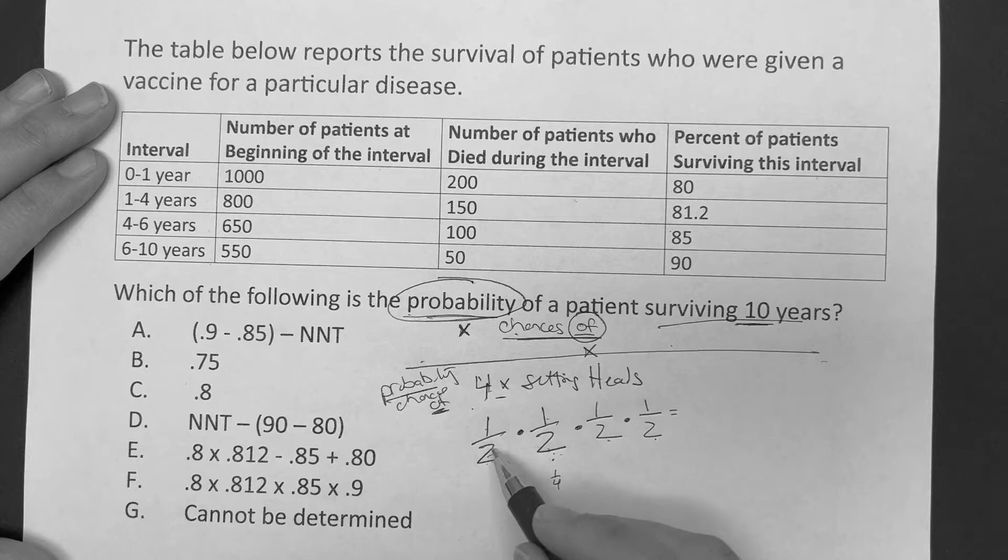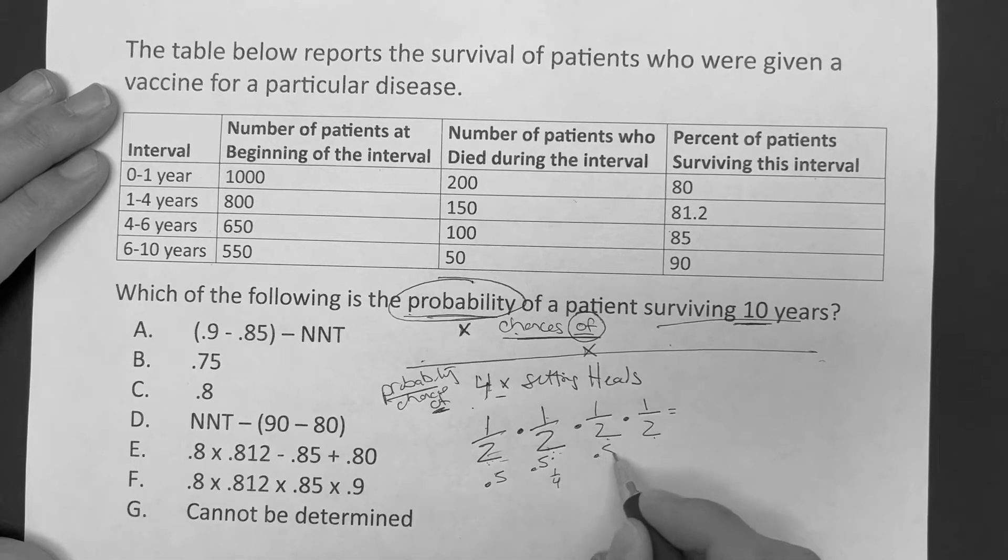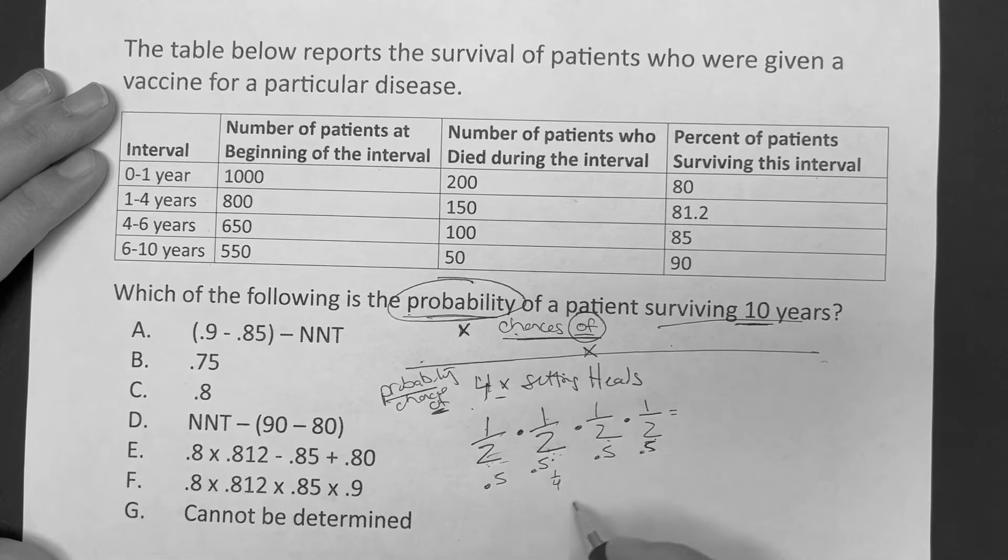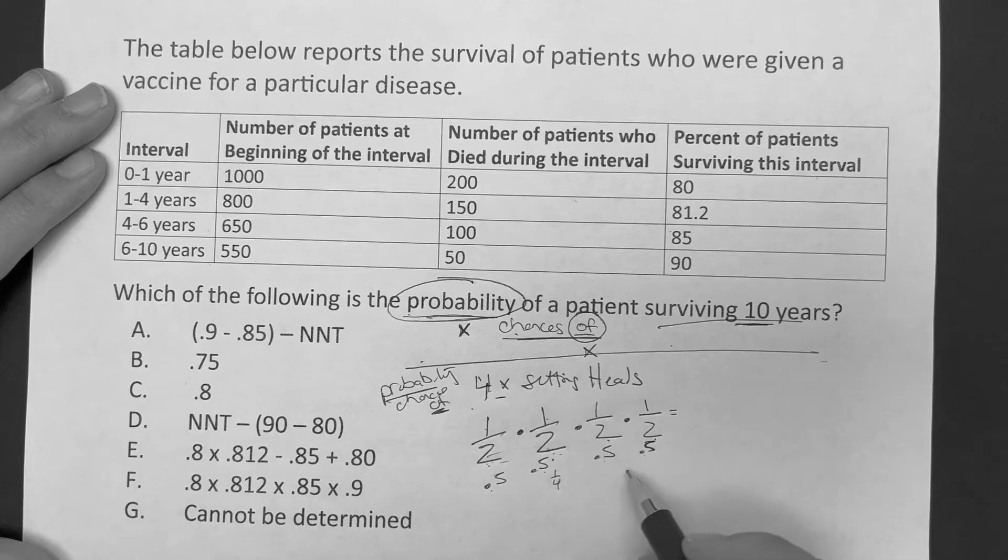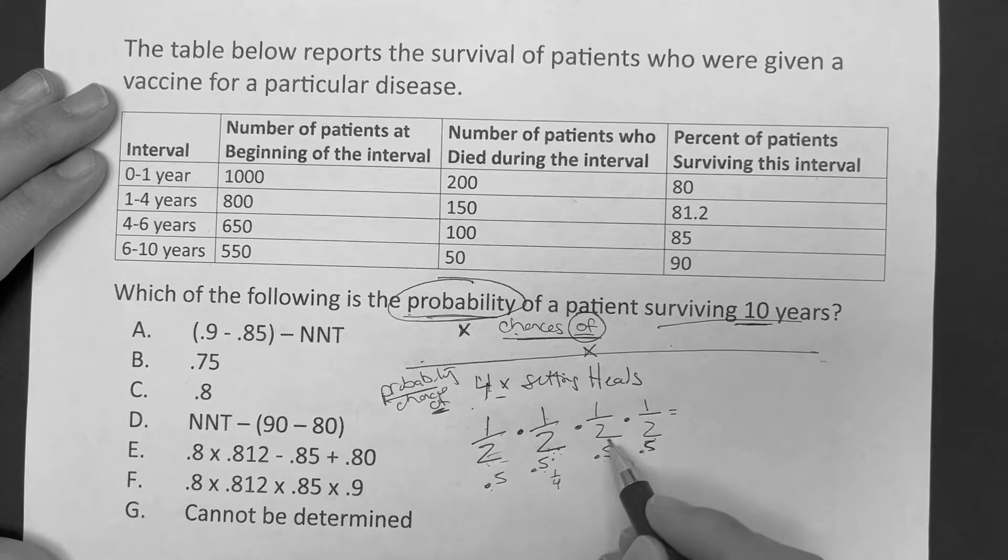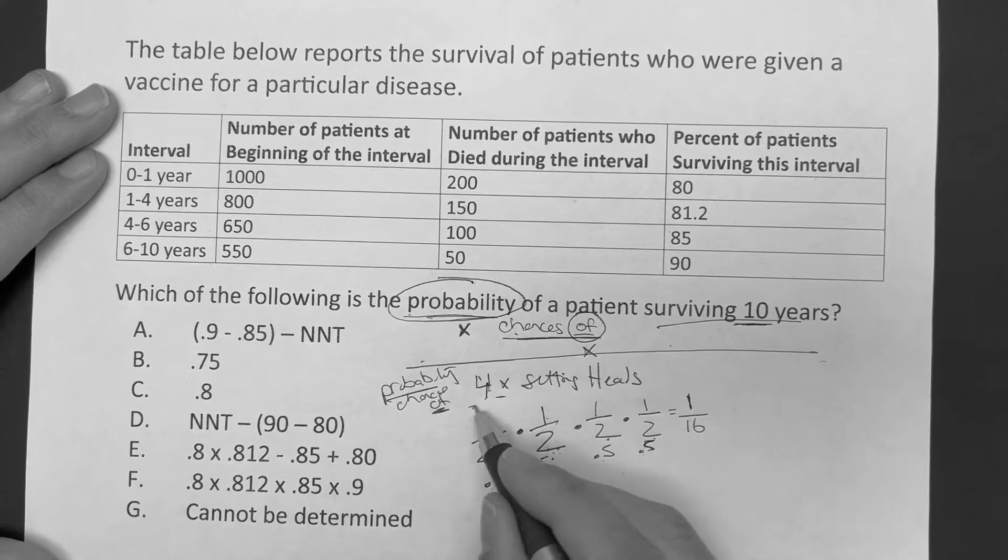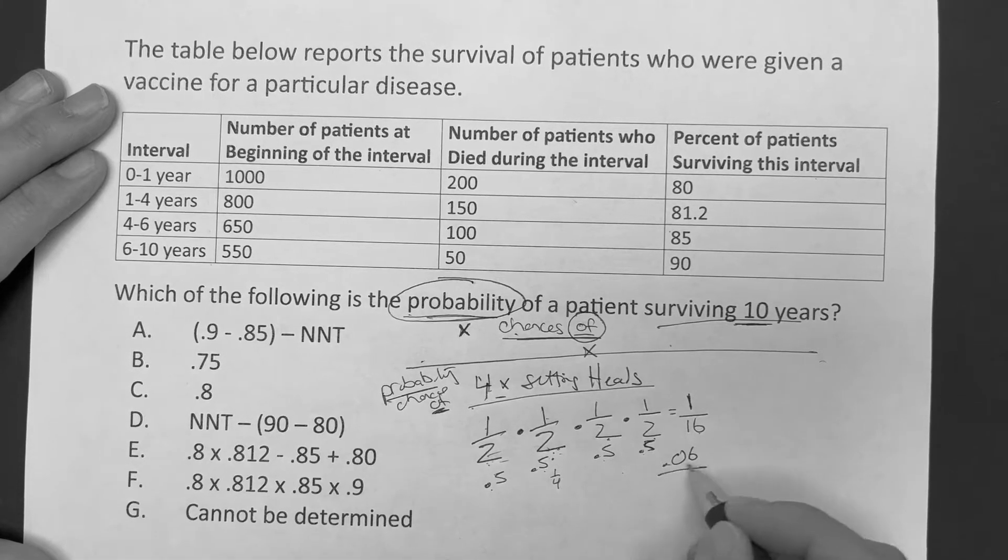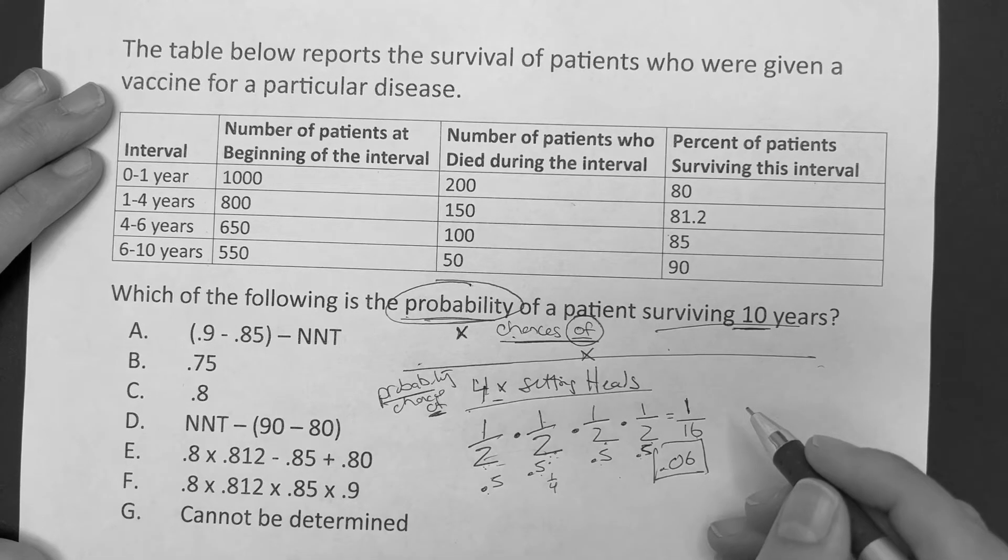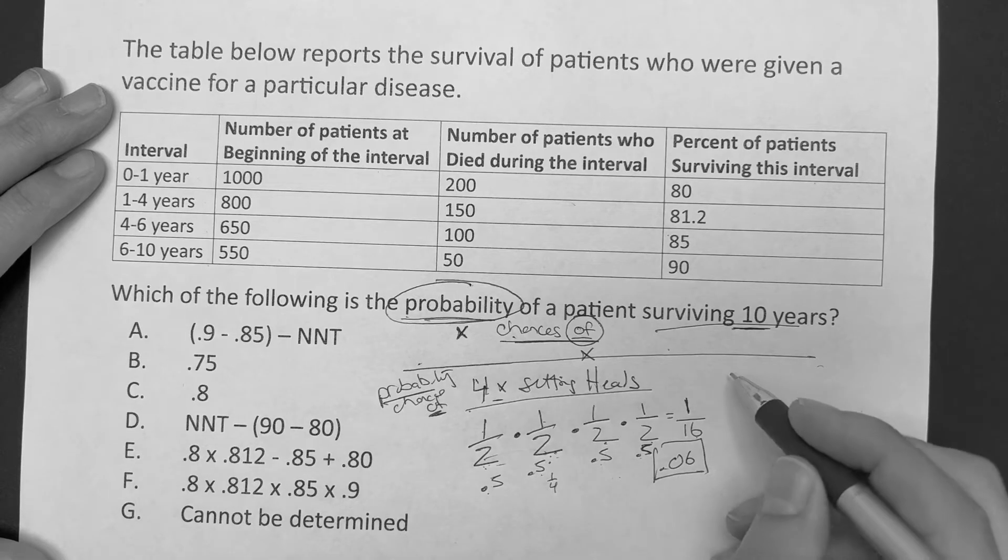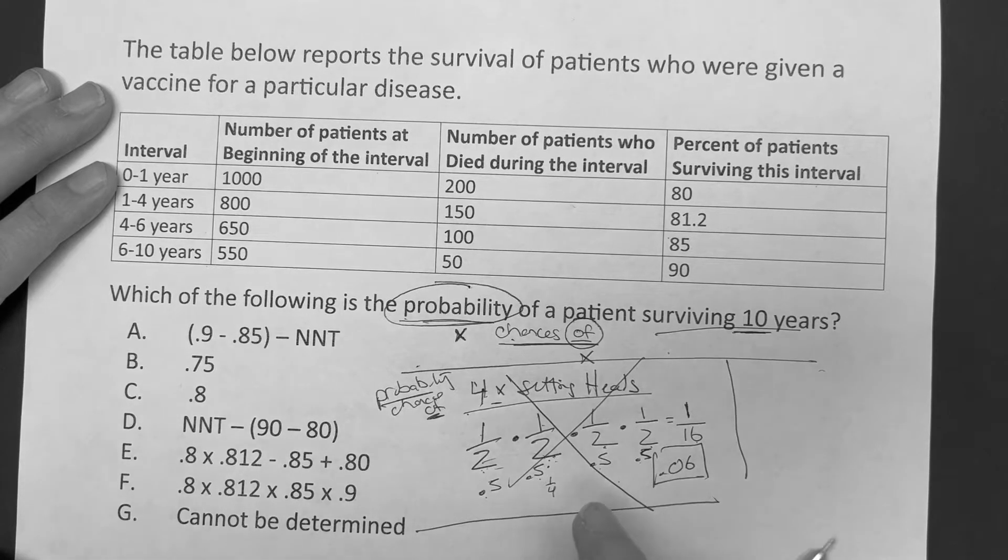To get that fourth heads, I would have to go one half times one half times one half times one half, because it's saying what is the probability, what are the chances of getting heads four times in a row. So it's 0.5 times 0.5 times 0.5 times 0.5. You can do the fractions in your head. Two times two is four, four times two is eight, and eight times two is 16. So 1/16th, the chance of getting heads four times in a row is 1/16th. You're saying, I know they're not going to ask me about flipping a coin four times in a row on USMLE, and you're right. But the purpose of that is, look how easy this can be.